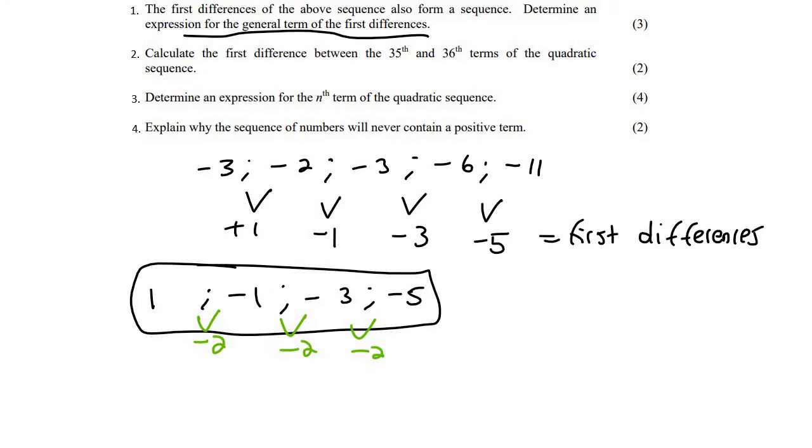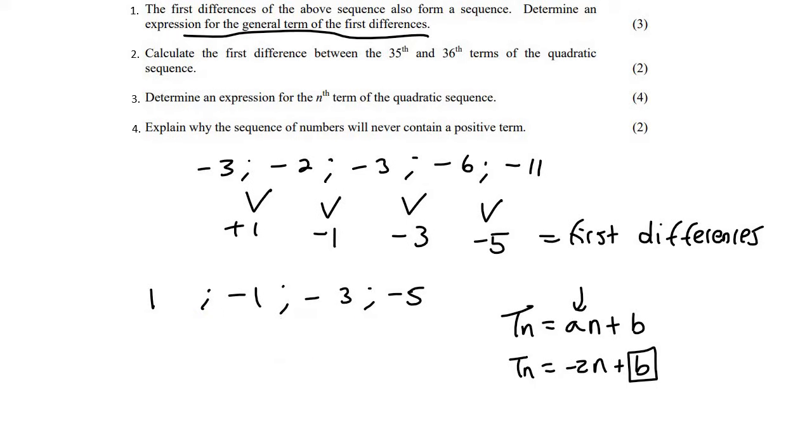Now, the formula for a linear pattern is Tn equals An plus B. And so A is always the difference. So that's just going to be minus 2N plus B. And then to find B, there's many different ways. But one of the common ways is to just plug in a random point. So, for example, this minus three. So the minus three is the answer. And it's at position one, two, three. It's at position number three. So we put that over there.